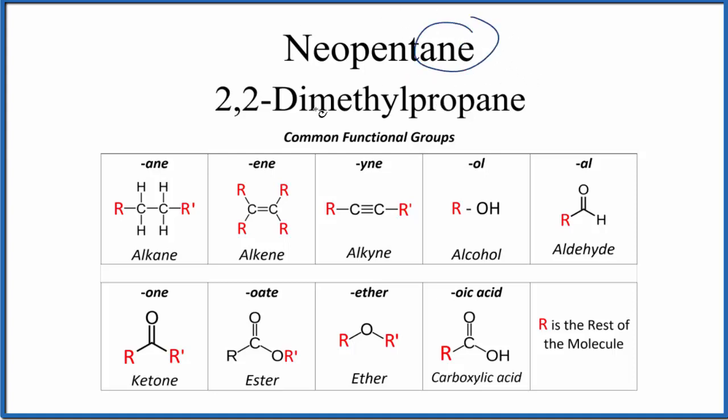It ends in A-N-E, so that's our first clue that we have an alkane. It's going to be all carbons and they're all single bonded. So we know that neopentane is an alkane. We also know that pent means we'll have five carbons. So let's start there.